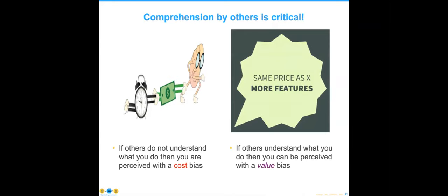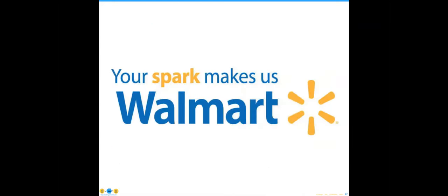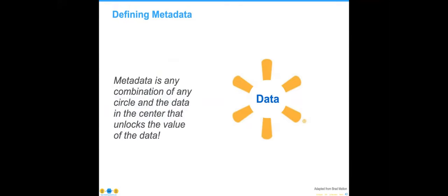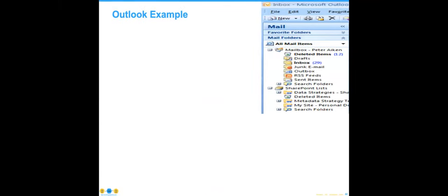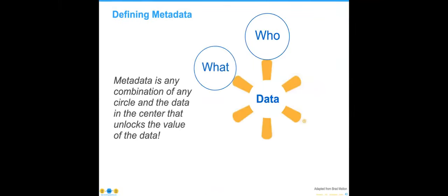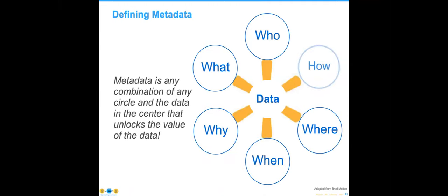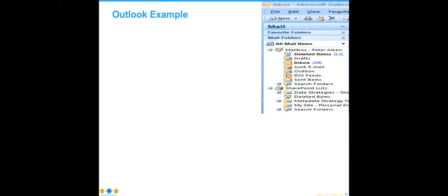I'm going to show you the origin of that slide Jesse used — it came from Walmart and a colleague, Brad Melton, who came up with this as Walmart was going through part of this journey. Data is a combination of any circle and any data that unlocks that value. Another example is your Outlook inbox — imagine if it didn't have stuff broken out by subject, priority, user ID. It would be very, very difficult to find important emails from your boss.